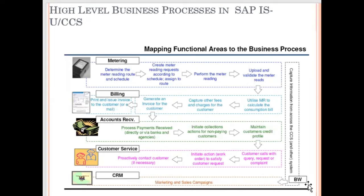For reporting, we have a separate system called BW — Business Warehouse, or sometimes it's called Business Objects. So BW or Business Objects — that is for reporting. This reporting system gets its initial data from the core ISU system.